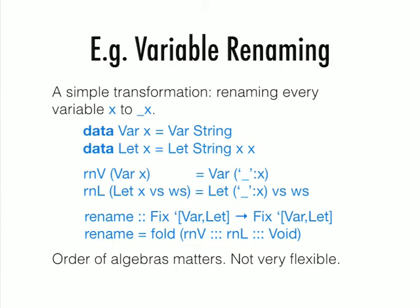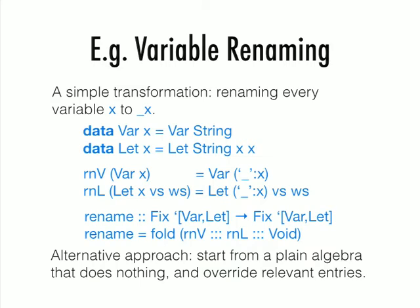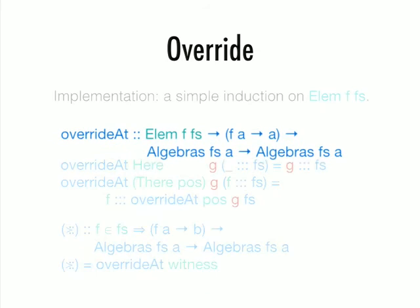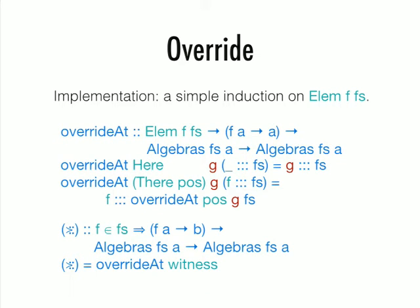You know how to do renaming for Let, and you can turn that into an algebra. You can put these two algebras together into a list. Then this function rename takes a fixed point of Var and Let to a fixed point of Var and Let. These two algebras must come in the same order as this list of algebras, and this algebra must be given fixed. So it's not very flexible. The style we recommend is instead to start from a plain algebra which does nothing, which gives you simply the identity transformation.